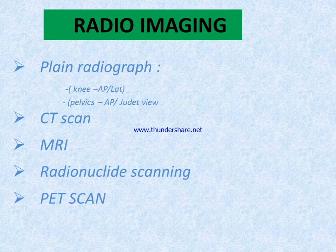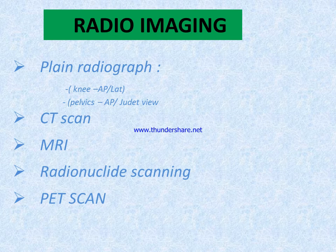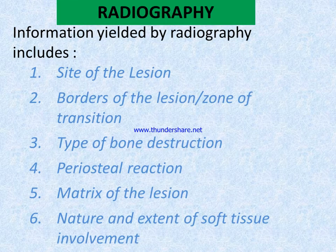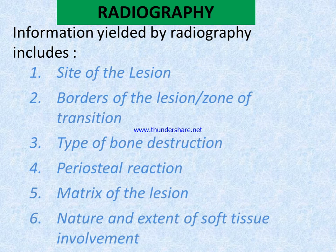For diagnosis, we first prefer plain radiograph (X-ray). The most common views are AP and lateral for the knee, and AP and digit view for the pelvis. Other imaging includes CT scan, MRI, radionuclide scanning, and PET scan. Radiographic information includes: site of lesion, border of lesion, zone of transition, type of bone destruction, periosteal reaction, matrix of the lesion, and nature and extent of soft tissue involvement.